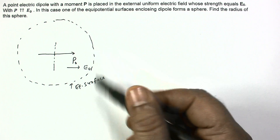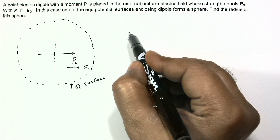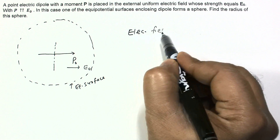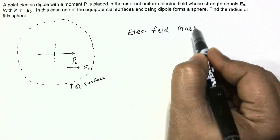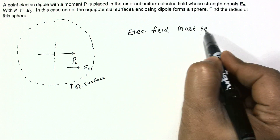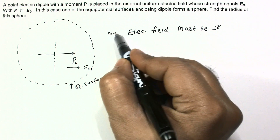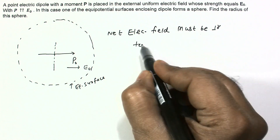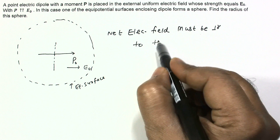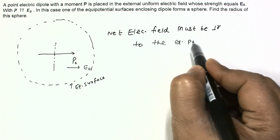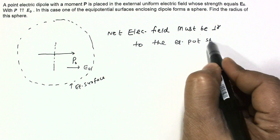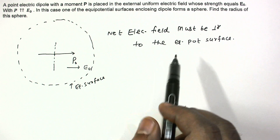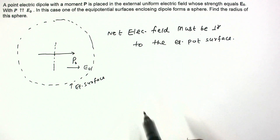There will be no tangential electric field on an equipotential surface. So the electric field must be perpendicular — that means the net electric field must be perpendicular to the equipotential surface.